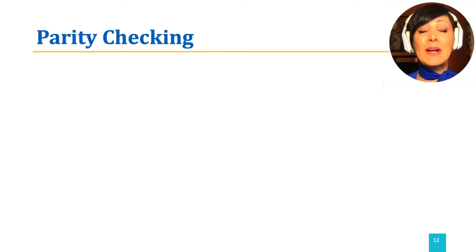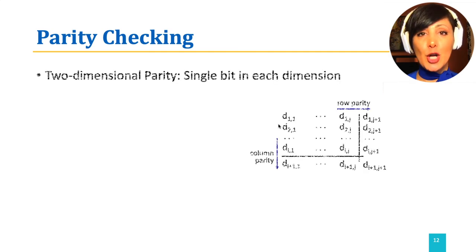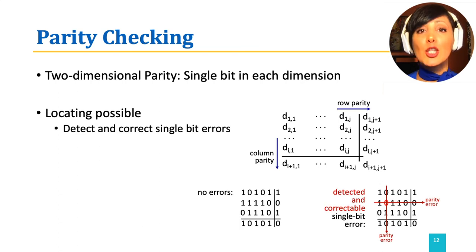We can apply the parity mechanism in a two-dimensional setting. It means applying a parity bit for each row and another parity bit for each column. If all of the rows and columns remain the same, all row and column parities will validate the same. But if a single bit flip happens, it will affect two parity bits: the parity bit of the row and the parity bit of the column.